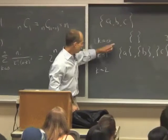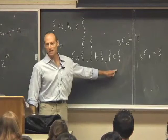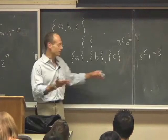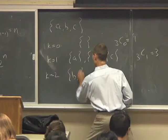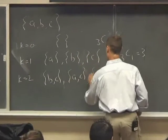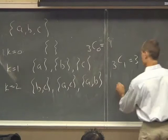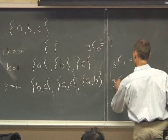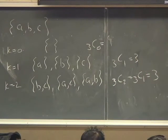We have the subset that leaves a out, the subset that leaves b out, and the subset that leaves c out. So one of these subsets is {b, c}, one of them is {a, c}, and one of them is {a, b}. 3 choose 2 equals 3 choose 1 equals 3.